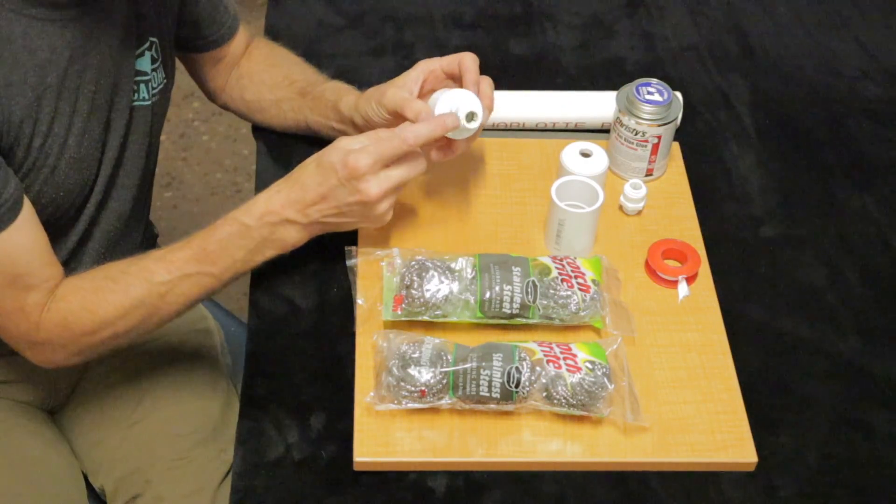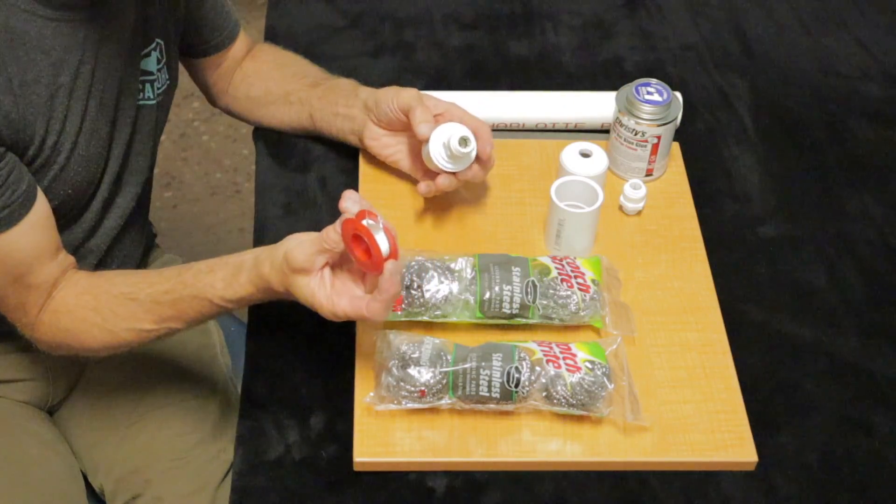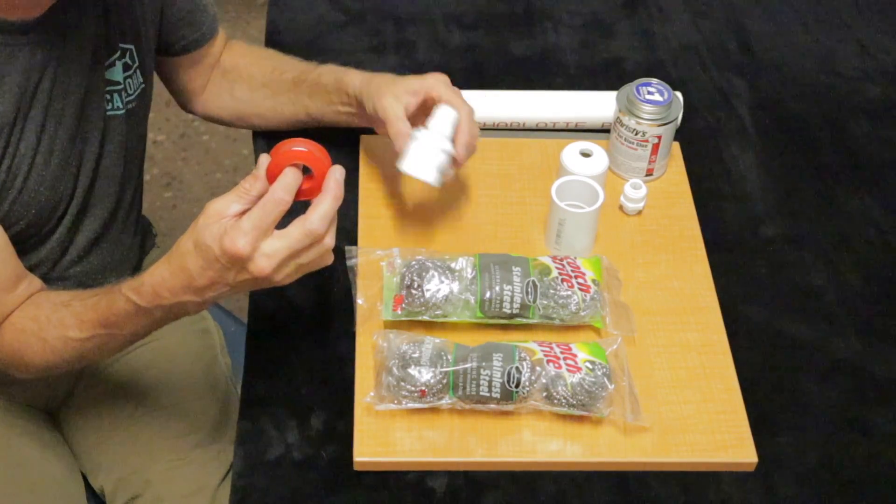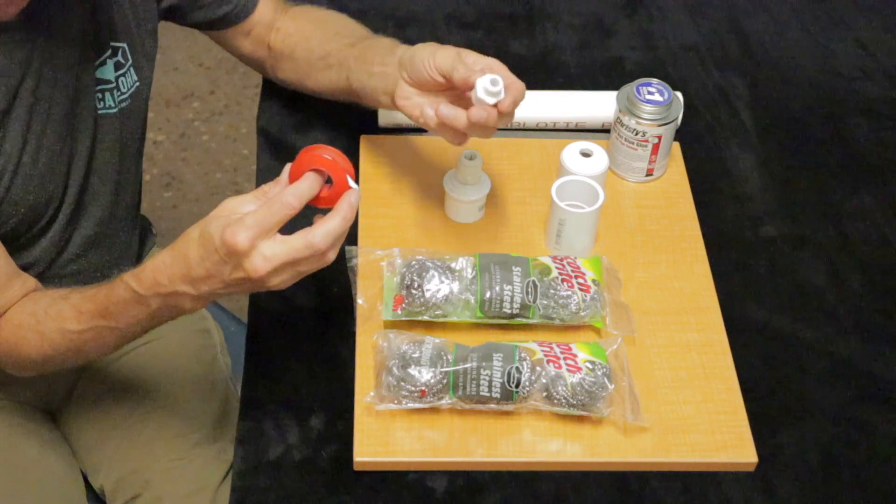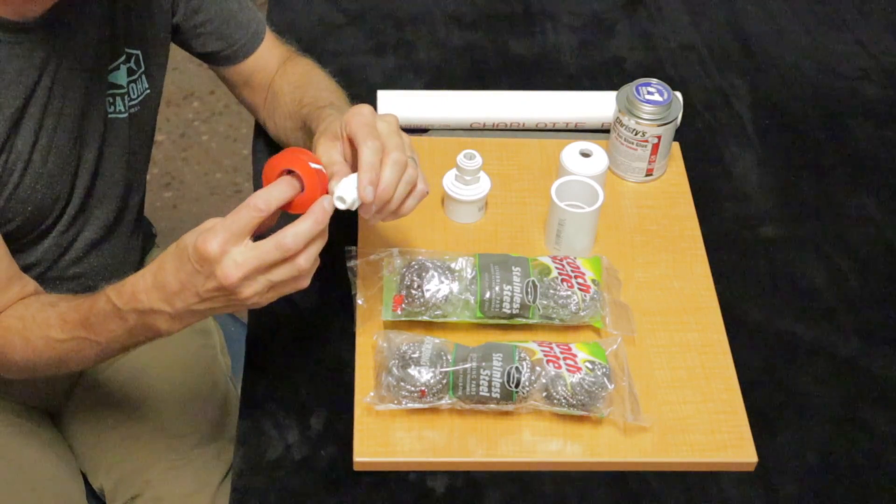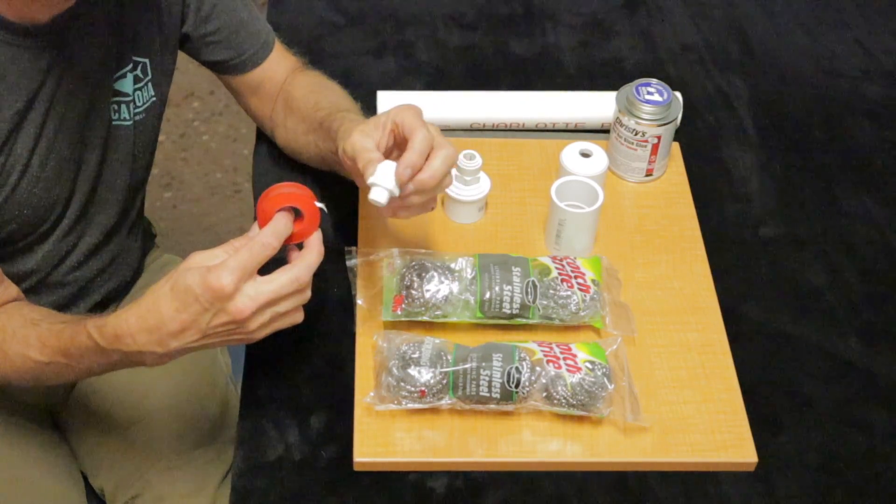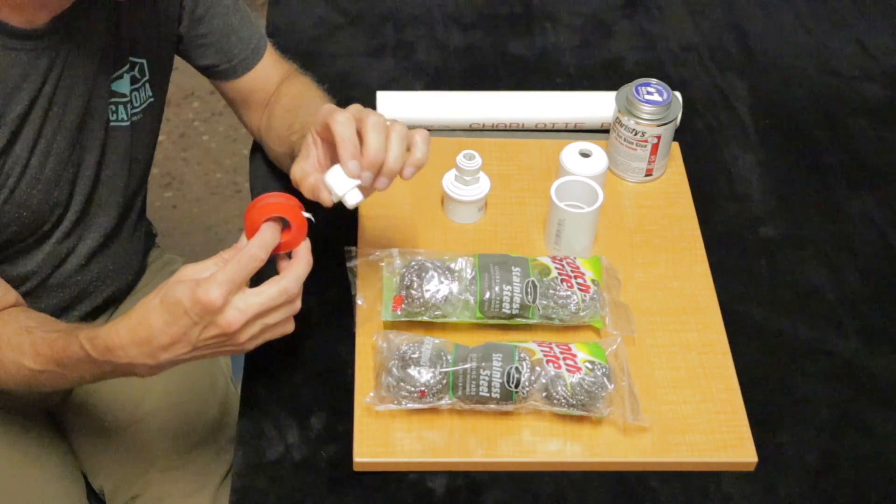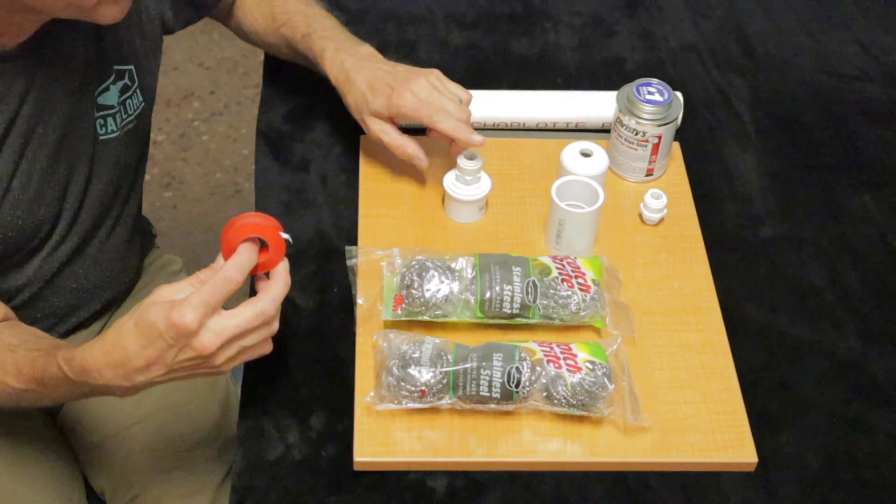So I've already threaded this in. You will need some Teflon tape. So here's a roll of Teflon tape. I already taped this one up. And so you just put at least a couple wraps on the threading of your push in connector and then thread this in.